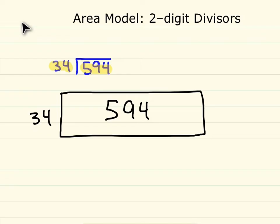So instead of using 594 right away, let's use big chunks that are friendly with 34. A big chunk I'm thinking of right away would be 340,